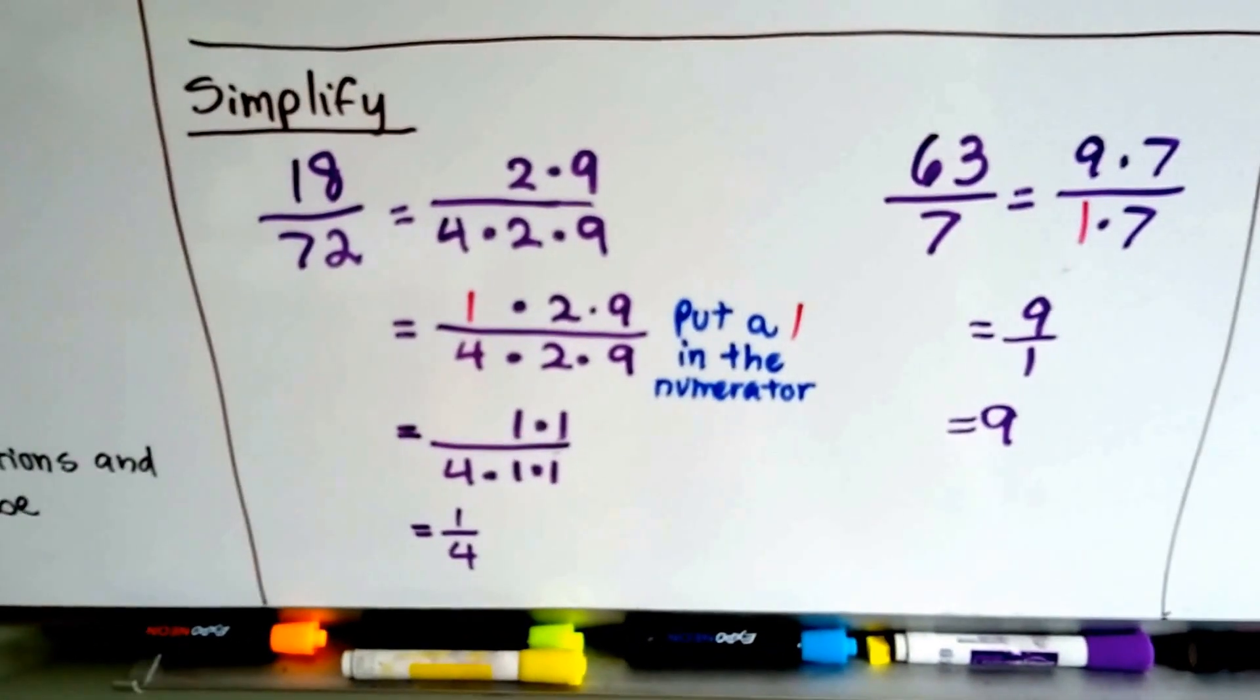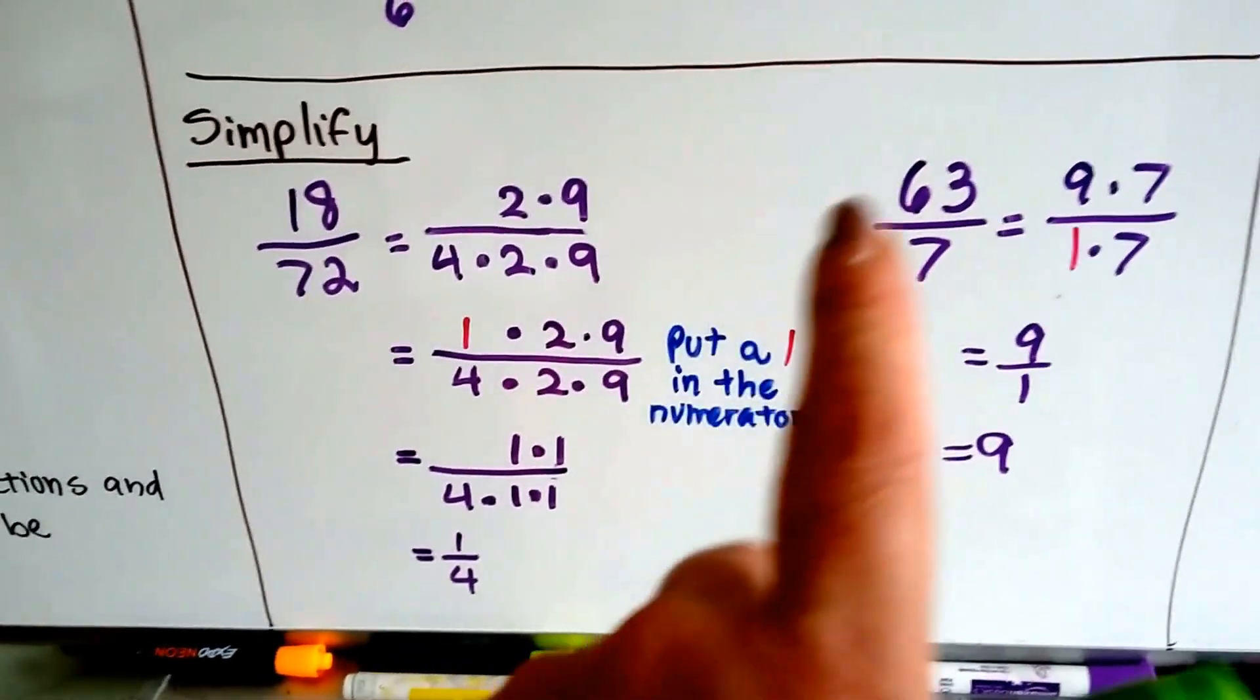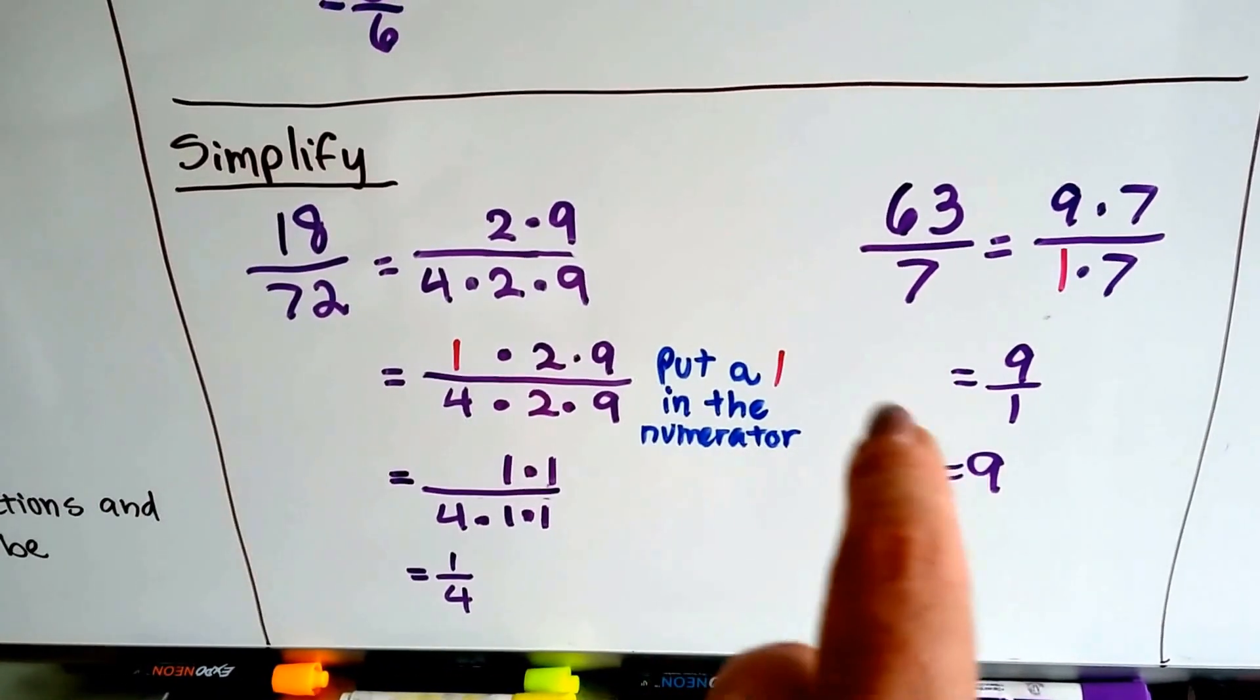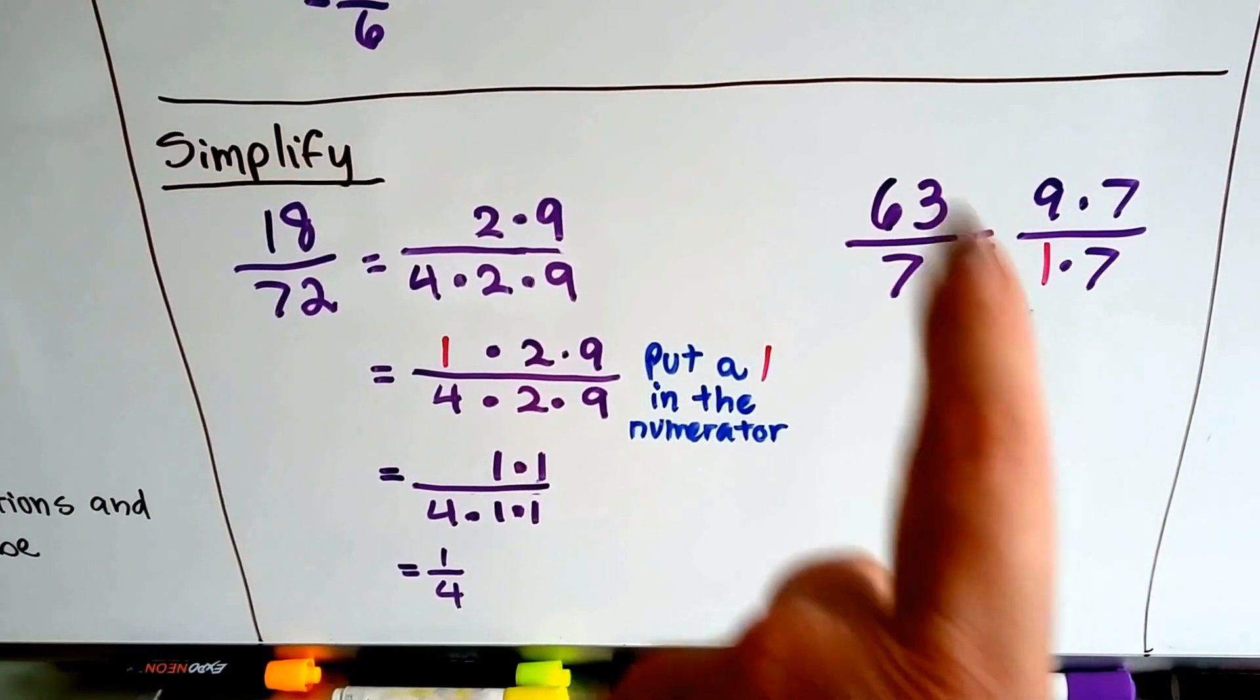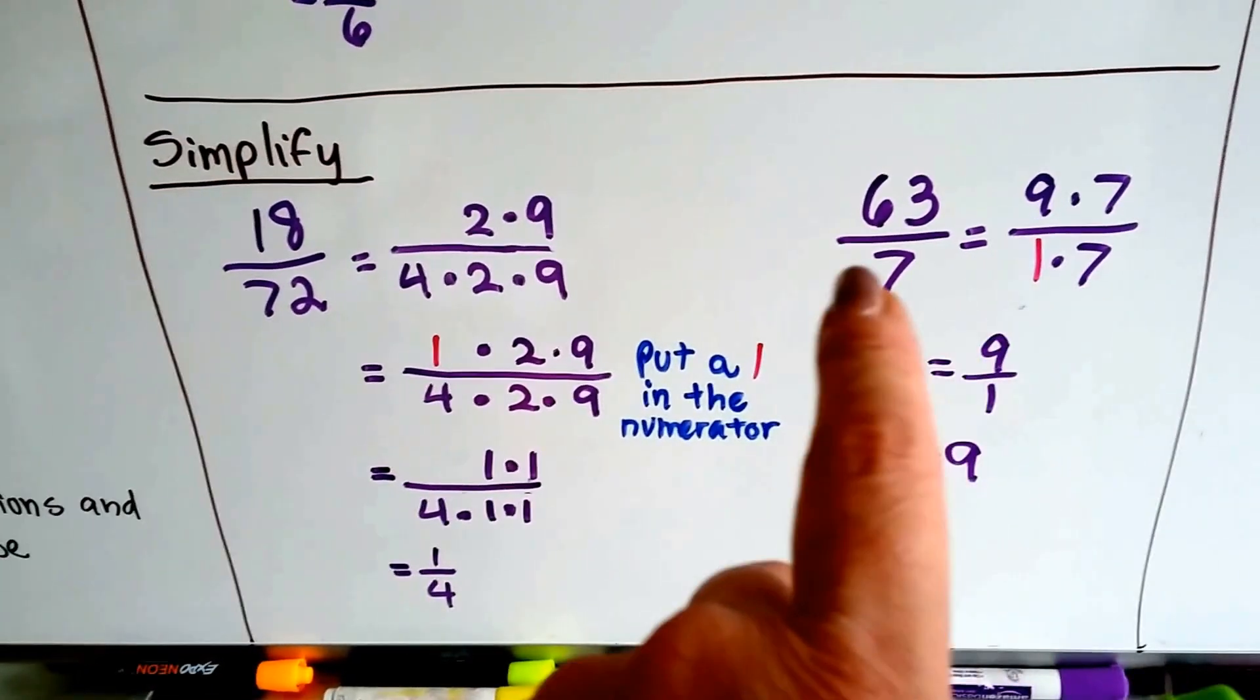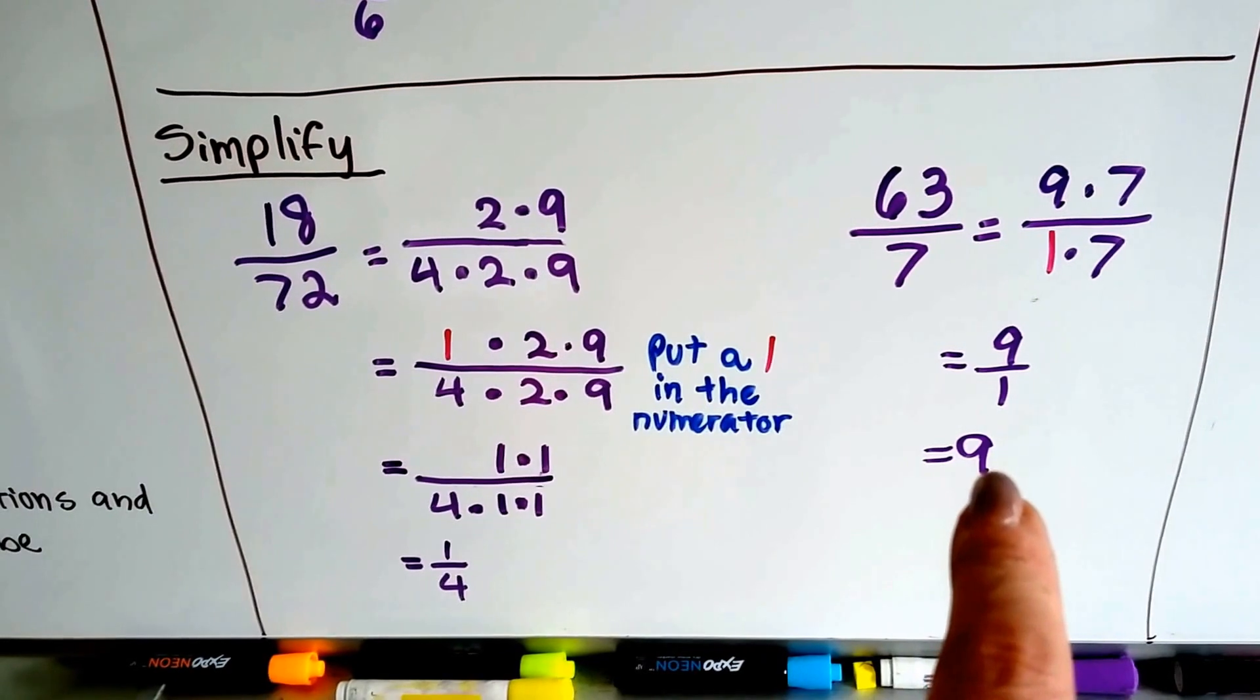Now, we could also do it this way. Let's say we had 63 over 7. We could say 9 times 7 is 63, and 1 times 7 is 7. That's 9 over 1 or 9.